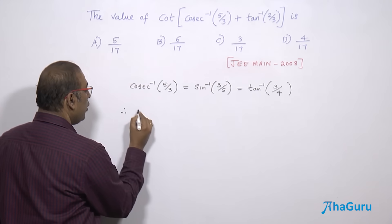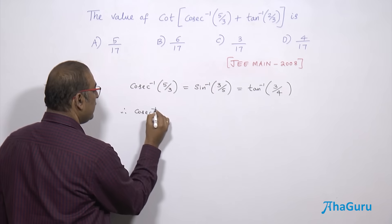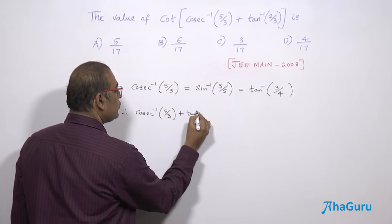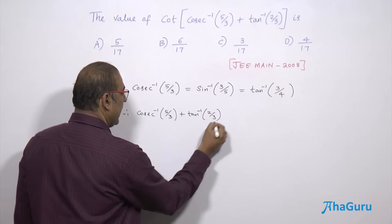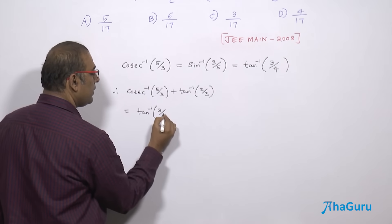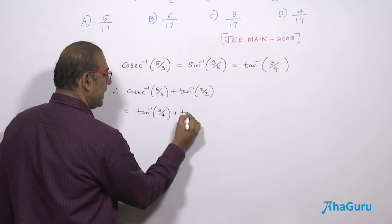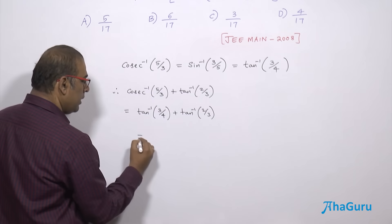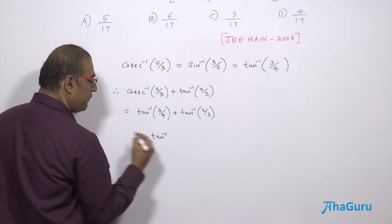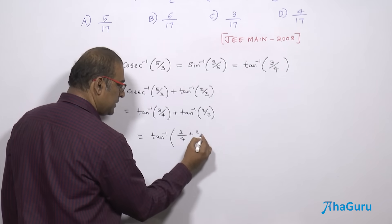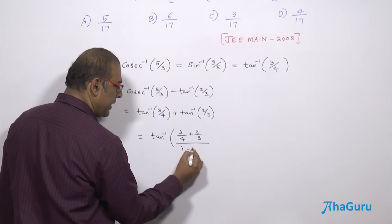Therefore, cosecant inverse of 5 by 3 plus tan inverse of 2 by 3 can be written as tan inverse of 3 by 4 plus tan inverse of 2 by 3. We have got a formula that tan inverse is sum of 2 tan inverse functions is tan inverse of the sum of these values by 1 minus the product.